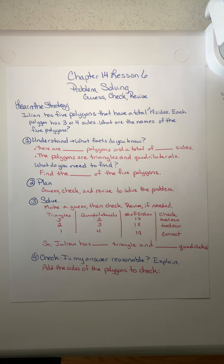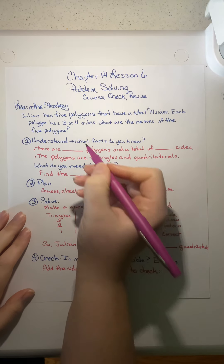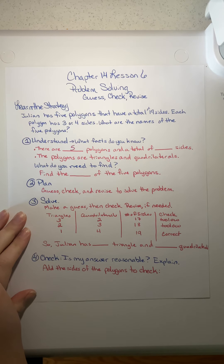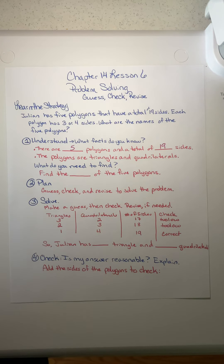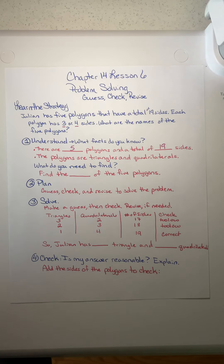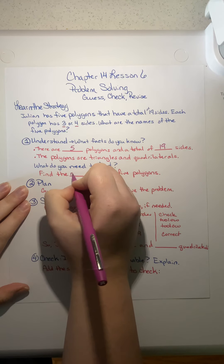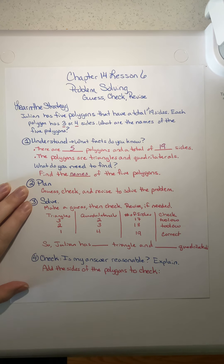Julian has five polygons that have a total of 19 sides. Each polygon has three or four sides. What are the names of the five polygons? We have to understand what facts we know. There are five polygons and a total of 19 sides. We also know that the polygons are triangles and quadrilaterals because there are three or four sides for each one. We need to find the names of the five polygons.